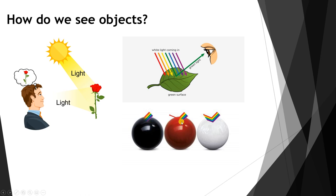A red object means that the red wavelength is the only one reflected from the object. A white object means that all colors are reflected. So we understand now that in order to see an object's actual color, that color must exist in the light source.